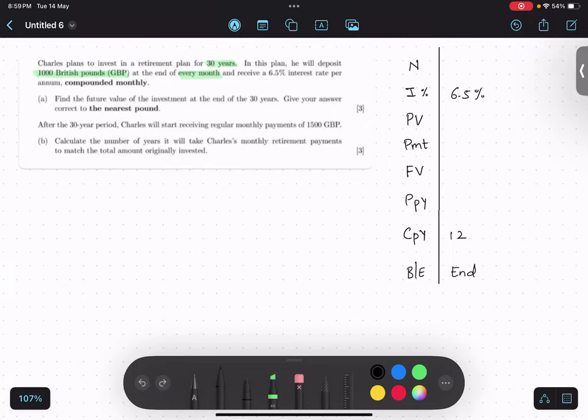Compounding is happening monthly and this £1000 is being paid monthly. It is every month, so where will it come? It will come in PMT. Plus or minus? Minus, because he's investing, so it is -1000. Present value: is there anything in the bank? No, so it is zero. Now future value we have to calculate.